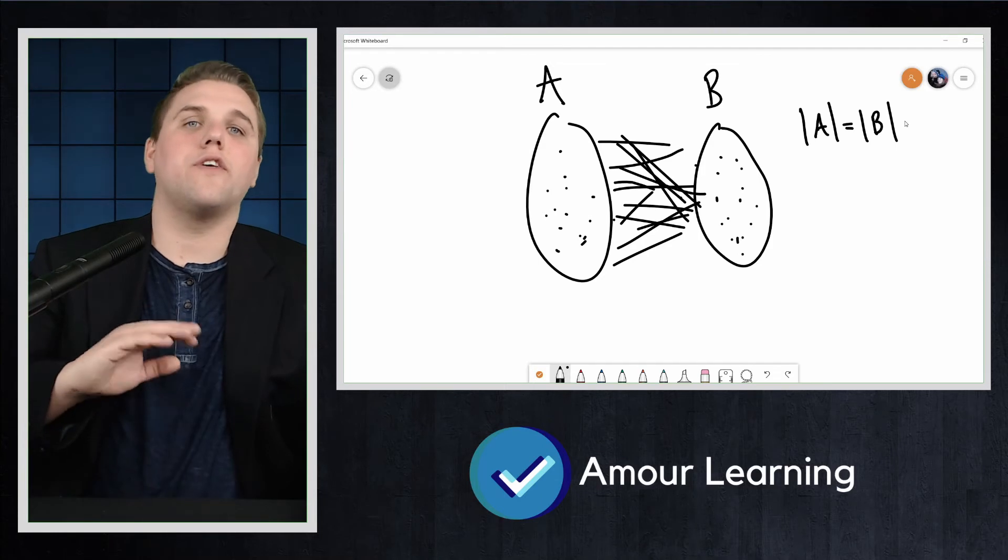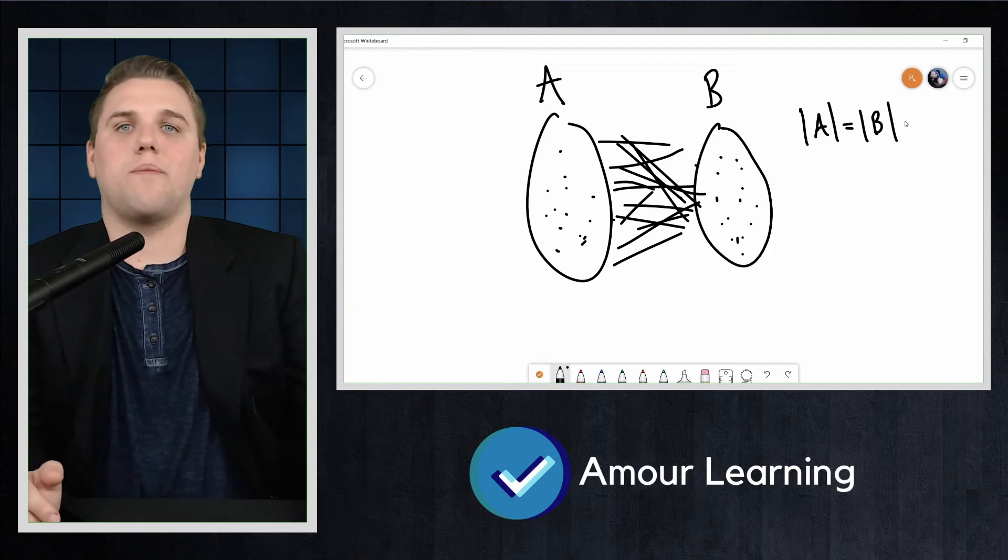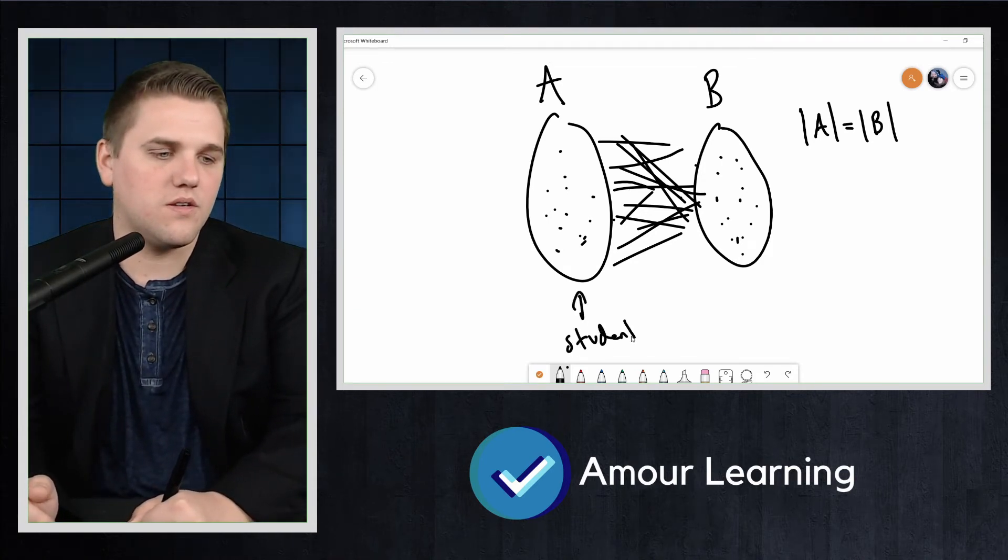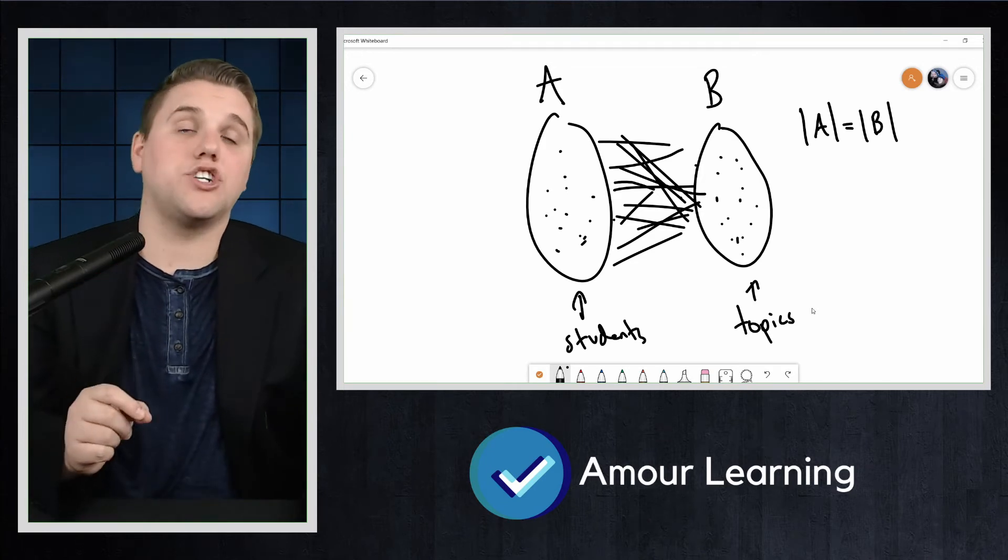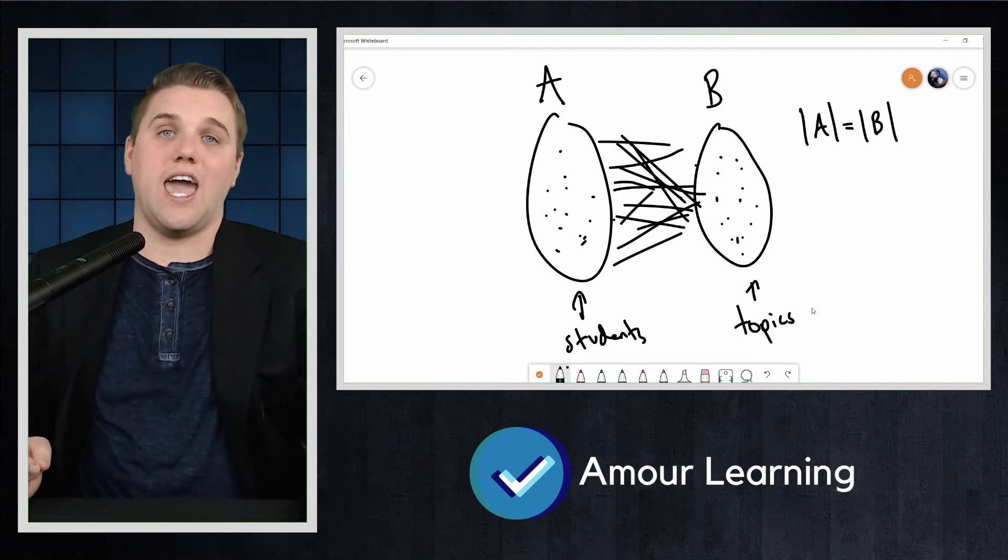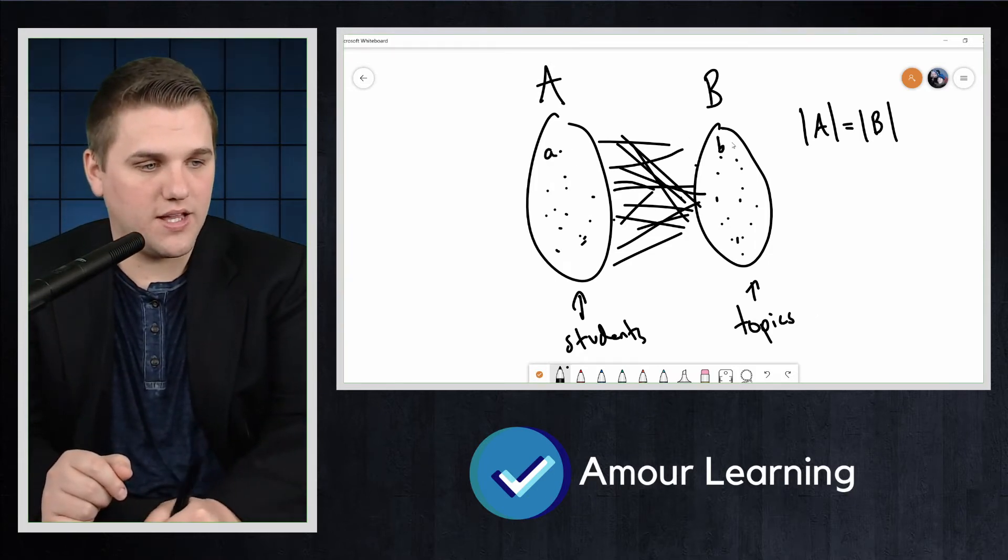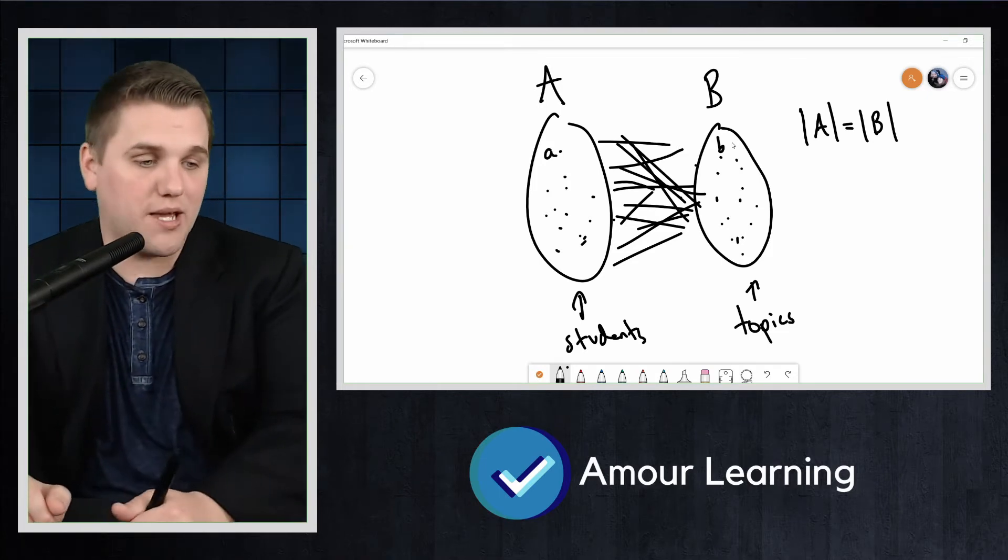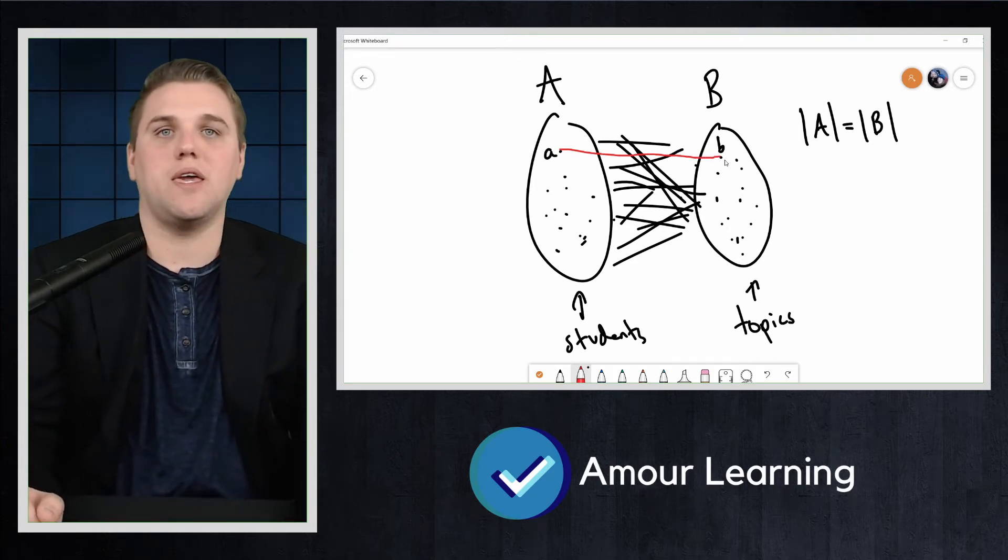Some context might make this easier to understand. Think of the vertices in A as representing students in a class, and the vertices in B representing presentation topics. So these are students, and these are topics. We put an edge from a vertex A to a vertex B, so here's A here's B let's say, if student A would like to present on topic B.